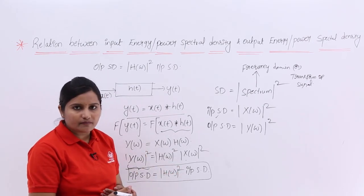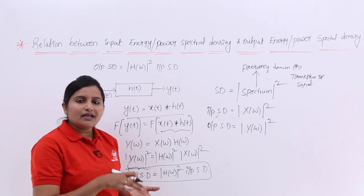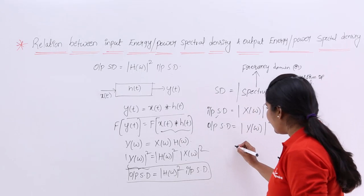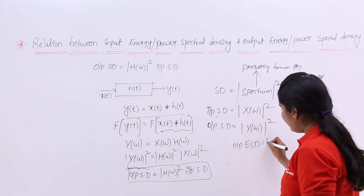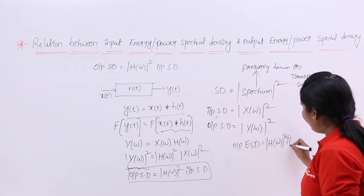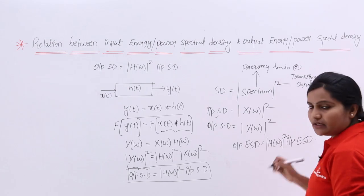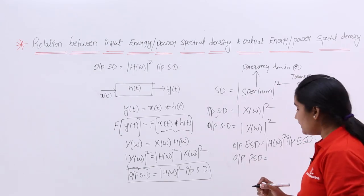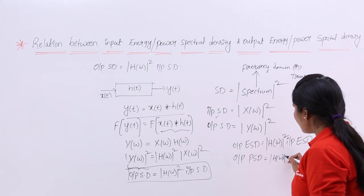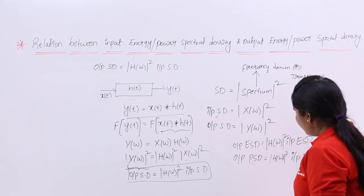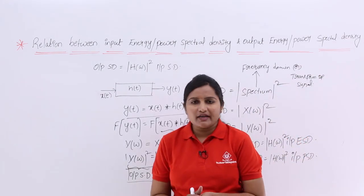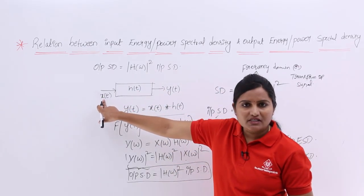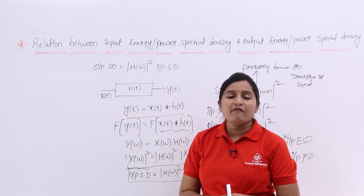The same relation applies to energy spectral density: output energy spectral density equals modulus of H of omega whole square into input energy spectral density. The same also applies to power spectral density: output PSD equals modulus of H of omega whole square into input PSD. This relation is called energy spectral density when the signal X of t is an energy signal, and power spectral density when X of t is a power signal.